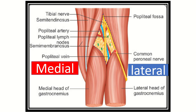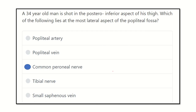In this picture of the diamond-shaped popliteal fossa, we can see most visibly the popliteal artery and popliteal vein medially. In the upper part, the sciatic nerve descends and bifurcates into two parts: the tibial nerve and the common peroneal nerve. This common peroneal nerve lies at the most lateral part of the popliteal fossa. So our final answer is the common peroneal nerve. Thank you.